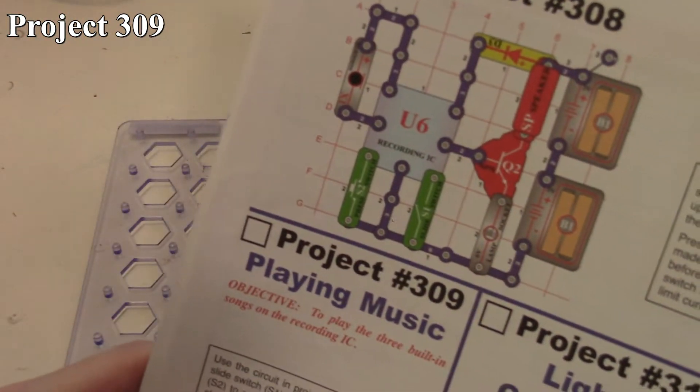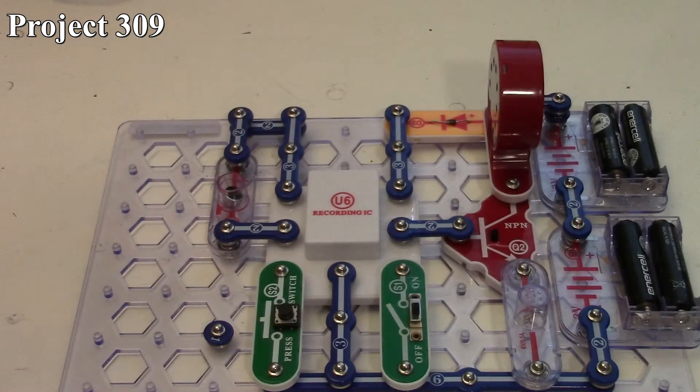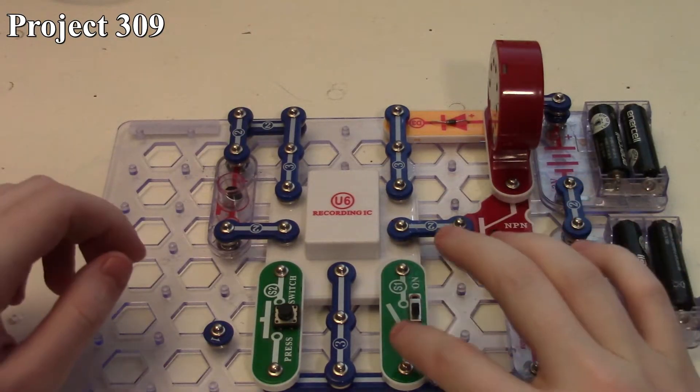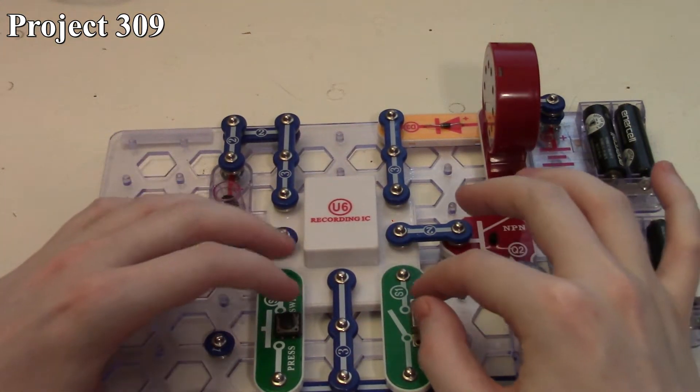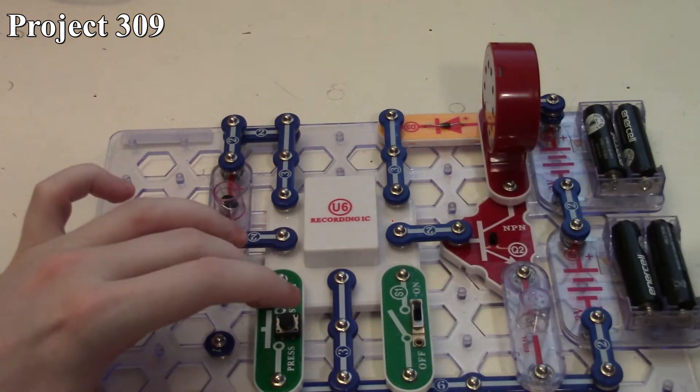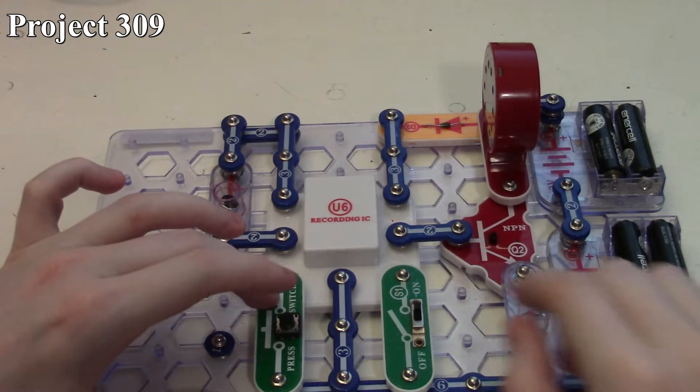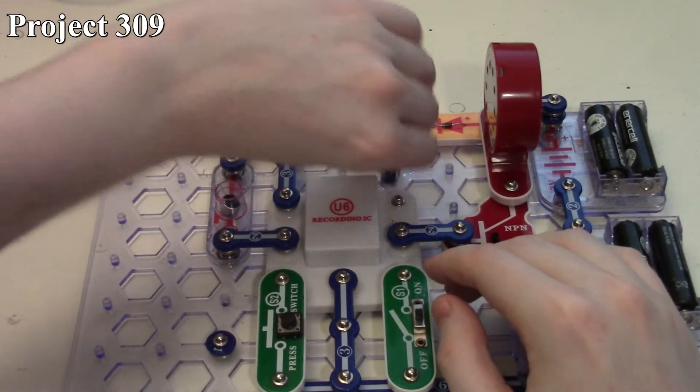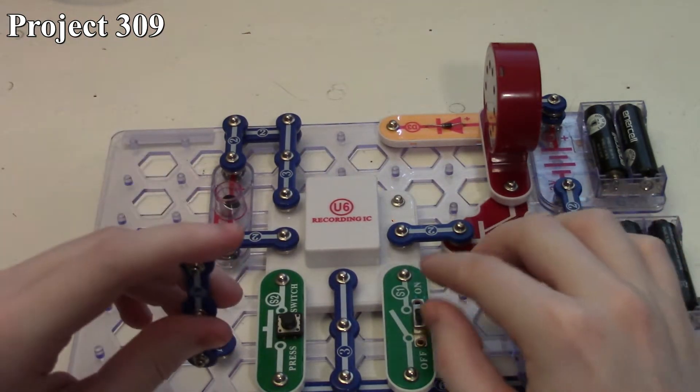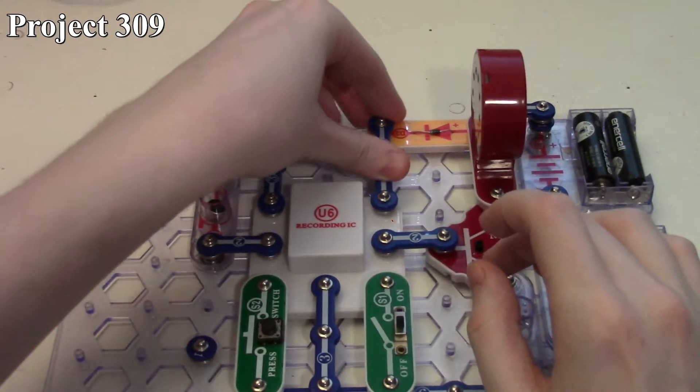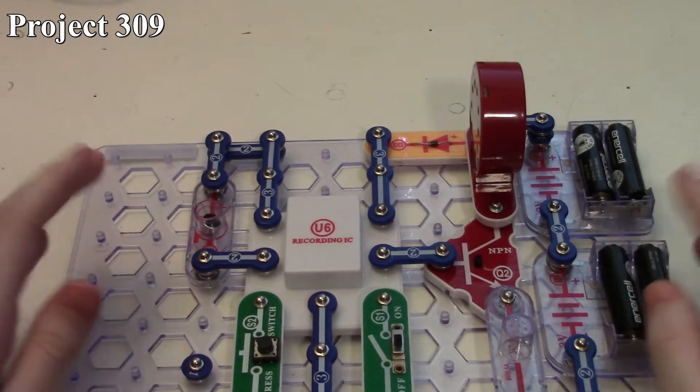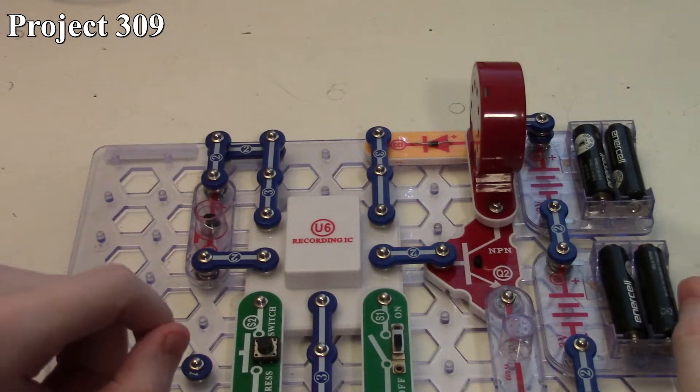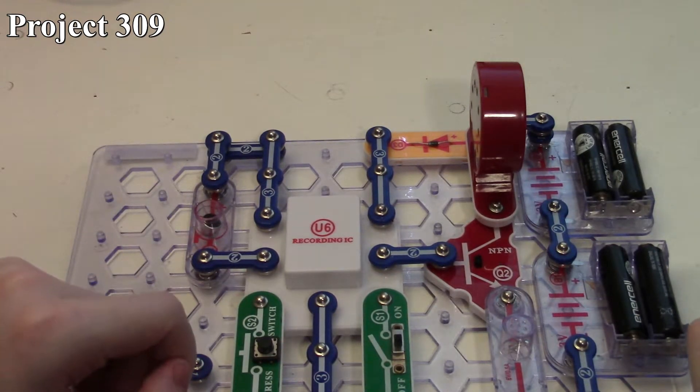Now project 309, when we start modifying the circuit a little bit, is playing music. That is not really any different from what we were doing. Basically, we're just going to use the slide switch to clear the RAM out and have it directly play the music built in on the IC. Let me take the power away and put the power back on. I guess I didn't take the power off long enough, but you get the idea. It's basically just having us play the three different music tunes like I already showed you in project 308.